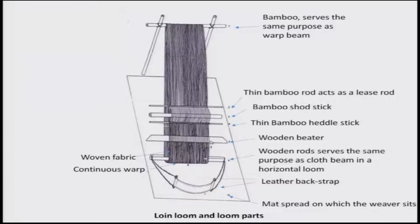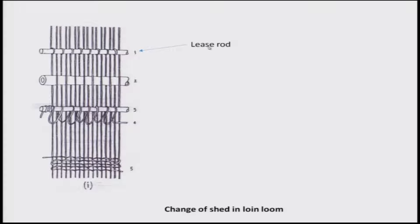Let us look at how the loin loom works. The lease rod keeps the warps organized — the odd yarn goes up and the even yarn goes down — in a systematic odd and even order for all the warps. A bamboo short stick separates both the odd and even warps. The heddle rod is lifted up and down, and there is a loop through which the warp passes.